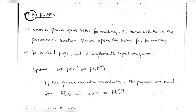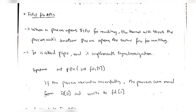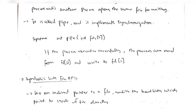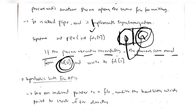FIFO file APIs - FIFO means first in first out. In FIFO, one process is executing and it will wait for another process to start execution before it can proceed. Here we use a pipe - a pipe has an array of two spaces: whatever you want to write is written in the second one. f[0] is the read end and f[1] is the write end. If the process executes successfully, the process can read from f[0] and write to f[1].